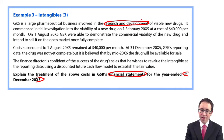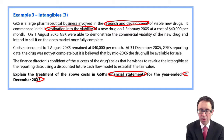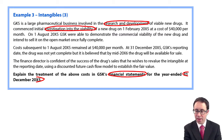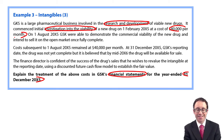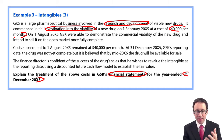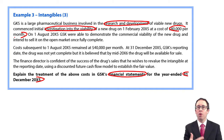It says the company commenced initial investigation into the viability of a new drug — so to you and I, is that not research? They started that on the 1st of February at a cost of $40,000 per month. Then on the 1st of August, they were able to demonstrate commercial viability of the new drug and intend to sell it on the open market once complete. So we're meeting the commercial viability aspect — we're able to sell it. I would assume that we have the resources available to complete it, and therefore it is technically feasible, looking to get probable future economic benefits and measure it reliably.